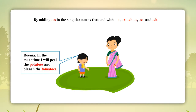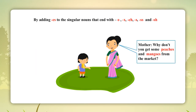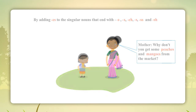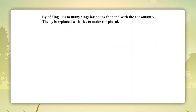Reema: 'In the meantime, I will peel the potatoes and blanch the tomatoes.' Mother: 'Why don't you get some peaches and mangoes from the market?'